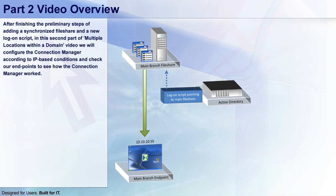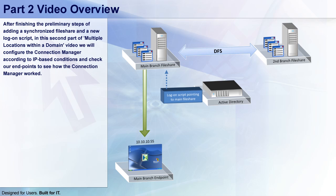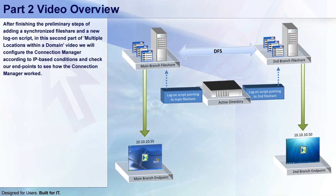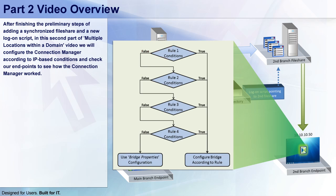Hello, and welcome to the second and last part of the Multi-Location Access Setup. In the last video, we took our fully working environment and replicated the main file share into the second branch file share, and created a new login script pointing to the Users folder on the second branch file share. And now we will configure the connection manager in order for the bridges on each endpoint to check which file share they should connect to for downloading and storing the different bridge components.